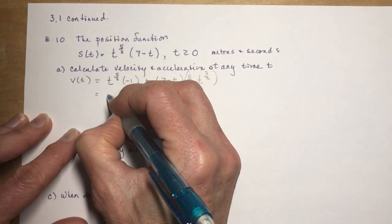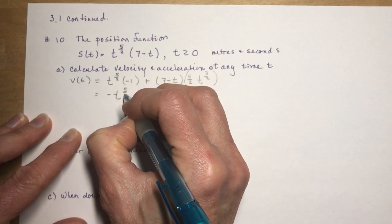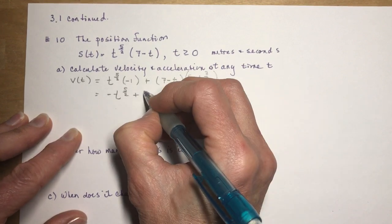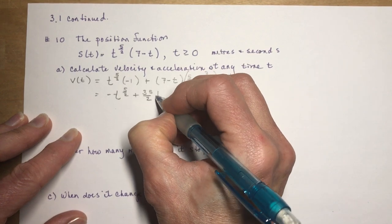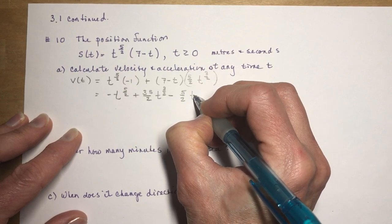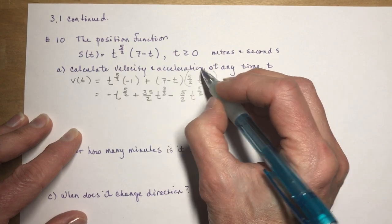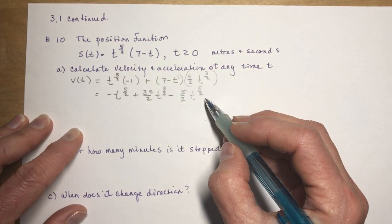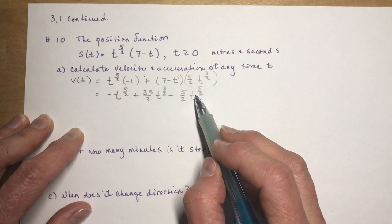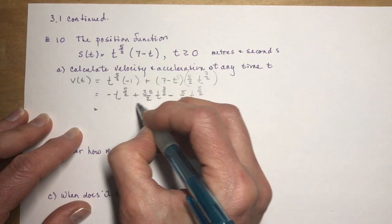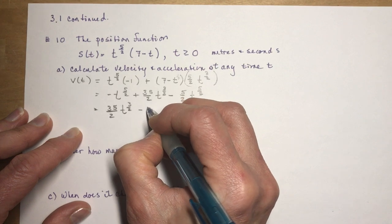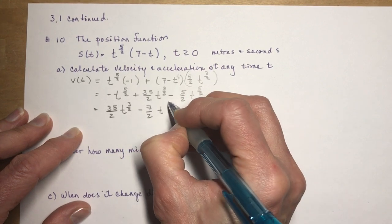Expanding that gives: negative t^(5/2), and then plus (35/2)t^(3/2). Multiplying the remaining term — negative t times (5/2)t^(3/2) — you add exponents, giving negative (5/2)t^(5/2). Combining like terms: v(t) = (35/2)t^(3/2) minus (7/2)t^(5/2). That's the velocity at any time t.